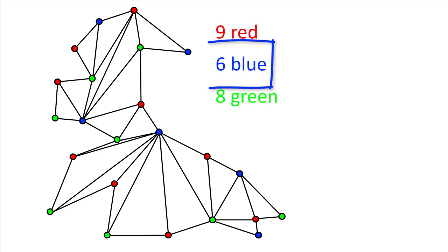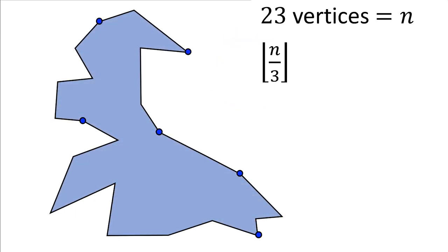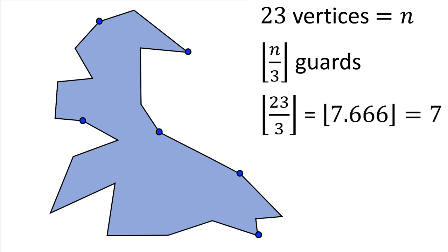Now, choose a color with the fewest vertices, and this defines a valid guard set with at most floor of n divided by 3 guards.